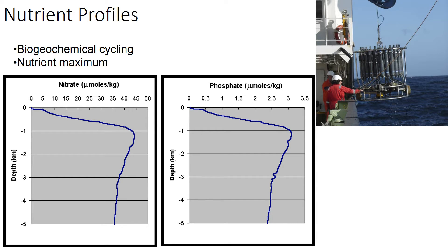That life gets passed through the food web and exported down into the deeper waters, where the organic material gets broken down by bacteria and the nutrients get released into the water column as nitrates and phosphates. This explains the profile: low concentrations in the surface water and then high concentrations of nutrients at depth. This is really in contrast to the concentration profile you'd expect for a conservative element, which would have relatively uniform concentration with depth.